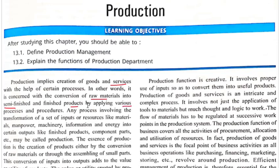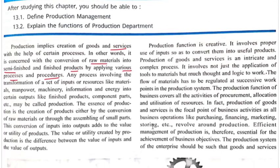Any process involving the transformation of a set of inputs or resources — like materials, manpower, machinery, information, and energy — into certain outputs like finished products, components, and parts may be called production. The essence of production is the creation of a product either by the conversion of raw material or through the assembling of small parts.